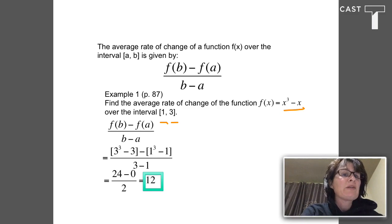Evaluating that, I get 24 minus 0 over 2. So the average rate of change of f(x) on the interval [1, 3] is 12.